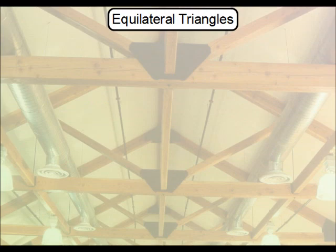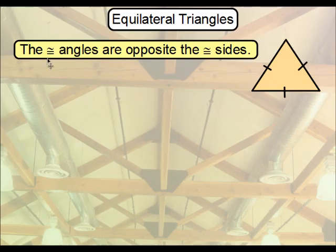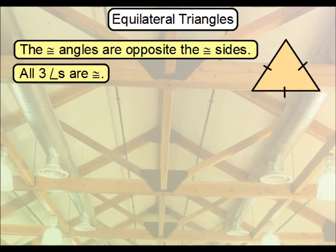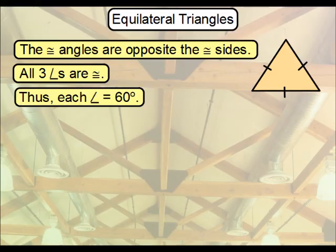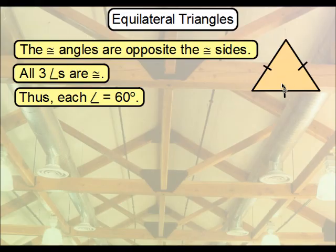Now let's explore equilateral triangles. The angles are opposite the congruent sides — we've been saying that. Since all three sides are congruent, all three angles are congruent. If all angles total 180 degrees and all three are congruent, each angle measures 60 degrees — simply divide 180 by 3. For equilateral triangles, they are also equiangular, and each angle is always 60 degrees no matter how big or small the triangle is. That's why the equilateral triangle can only be drawn one way.